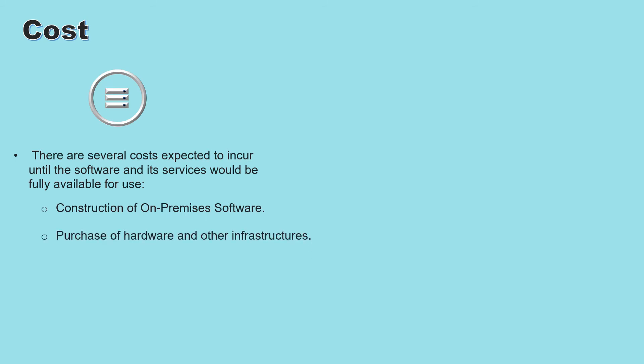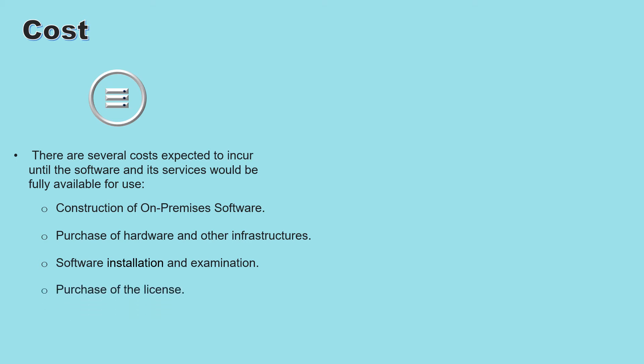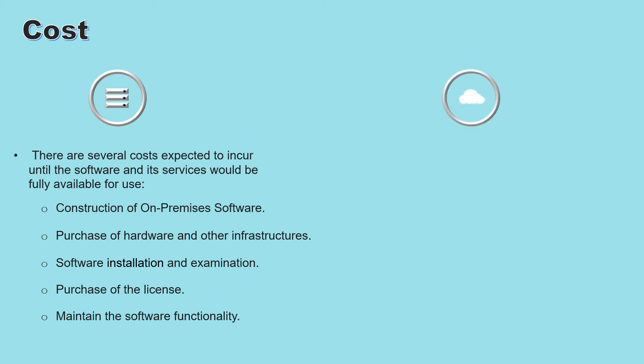For on-premises software, there are several costs expected until the software and its services are fully available. These include high initial costs for the purchase of hardware and other infrastructure, as well as costs for software installation and examination. The entity is also required to purchase a license for the particular software, involving cost and time for required procedures. Furthermore, sustainable maintenance and operations are required, and the entity bears those ongoing costs as well.